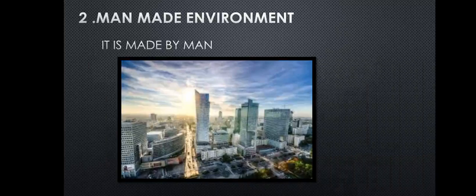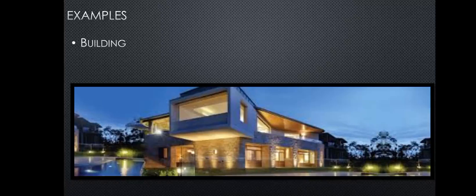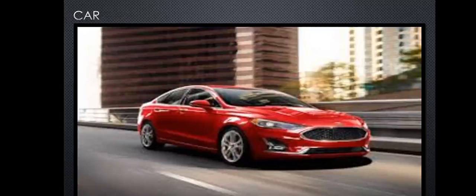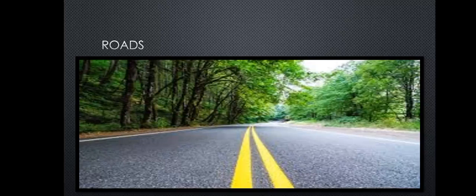Then we have man-made environment. It is made by man. For example, buildings — buildings are made by man using natural things such as stones, metals, etc. The next is cars, which are also man-made things made using natural resources. Then we have roads, which are also a man-made environment built using natural things, for example concrete and other materials.